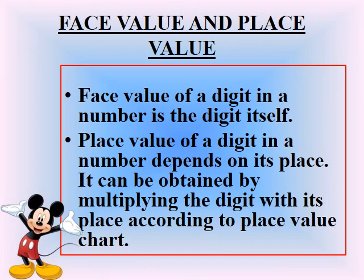The next topic is face value and place value. Let's revise the definitions. Face value of a digit in a number is the digit itself. But place value of a digit in a number depends on its position, and it can be obtained by multiplying the digit by its place value according to the place value chart.